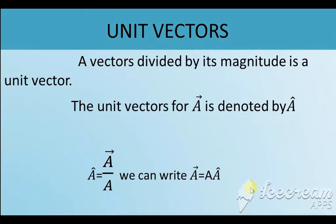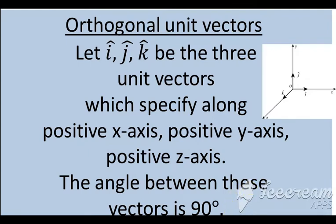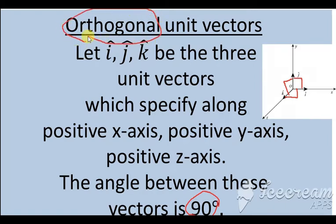Next is orthogonal unit vectors. What are orthogonal unit vectors? We are considering vectors in the x, y, and z coordinates. The angle between all these axes is 90°. All these angles are equal to 90°. If the angles are equal to 90°, those vectors are said to be orthogonal unit vectors. We are considering three vectors along the three coordinates x, y, and z.